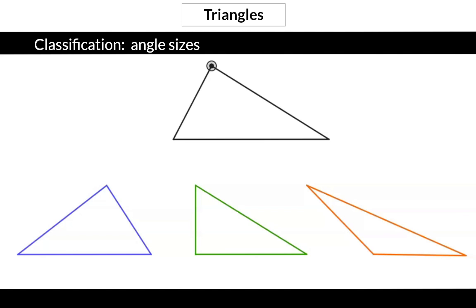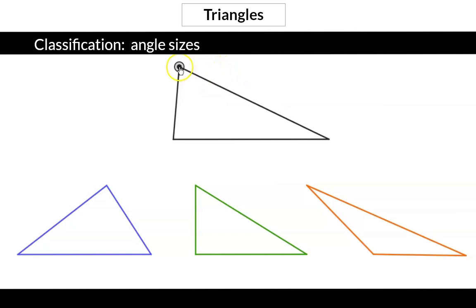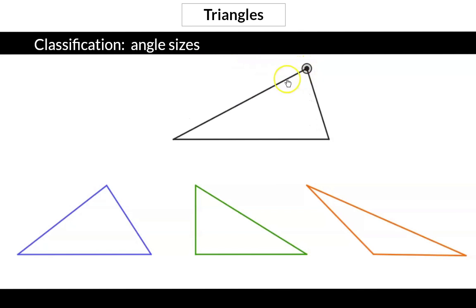When we classify according to the angle sizes we focus on the biggest angle inside the triangle. At the moment the biggest angle in this triangle is smaller than 90 degrees and is called an acute angle. All of these angles at the moment are acute.